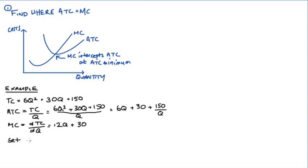So to find where they intersect, we're going to make them equal to one another. So average total cost equal to marginal cost. Now this means that 6q plus 30 plus 150 over q, I'm just substituting here, is equal to 12q plus 30. That's the marginal cost. Now we're going to solve for q.